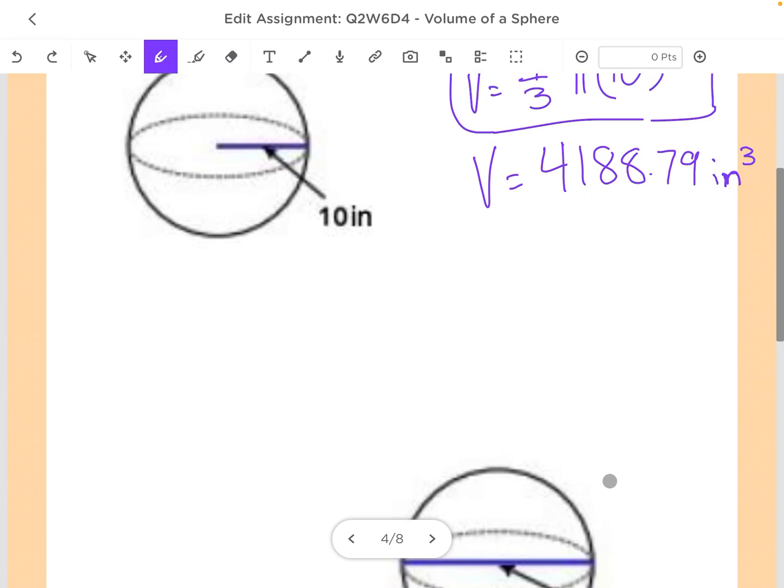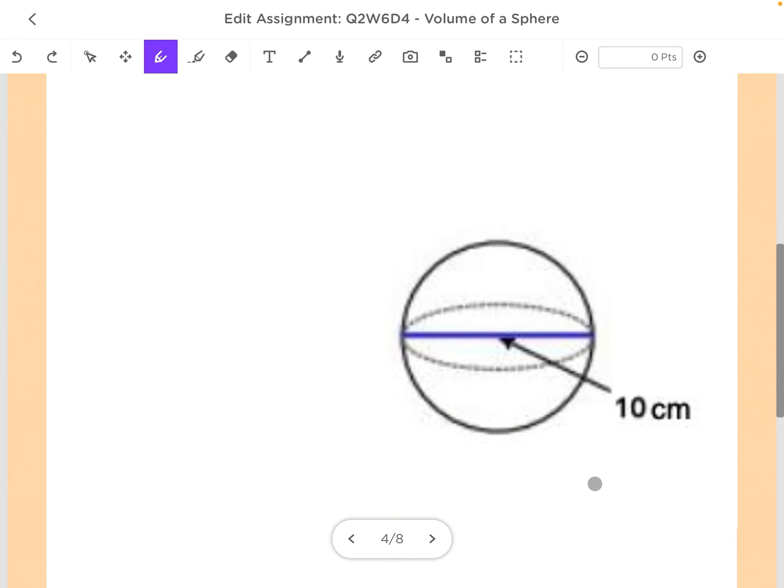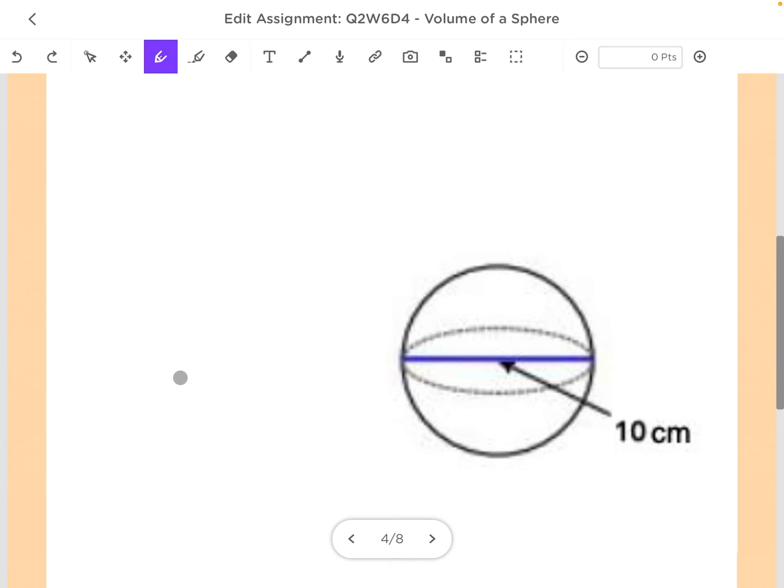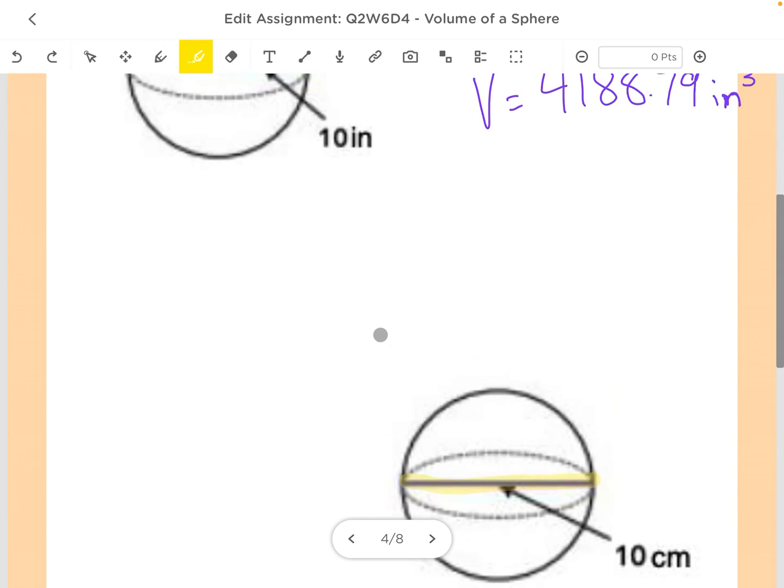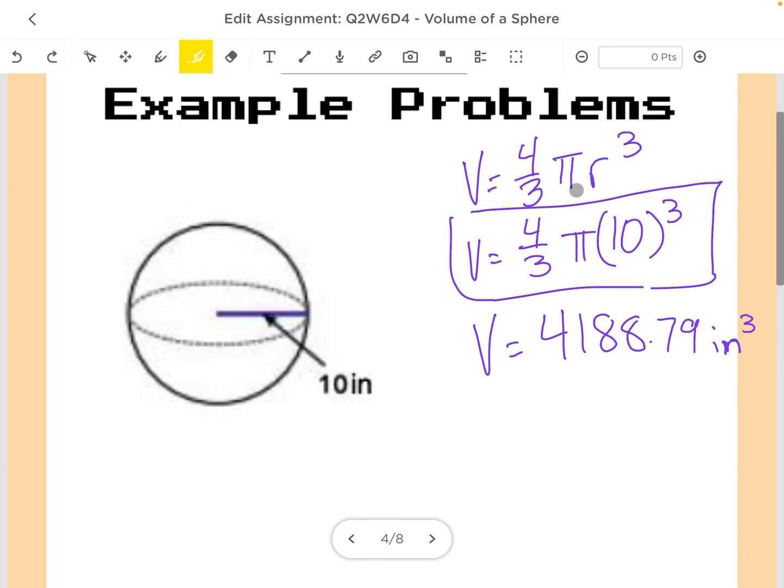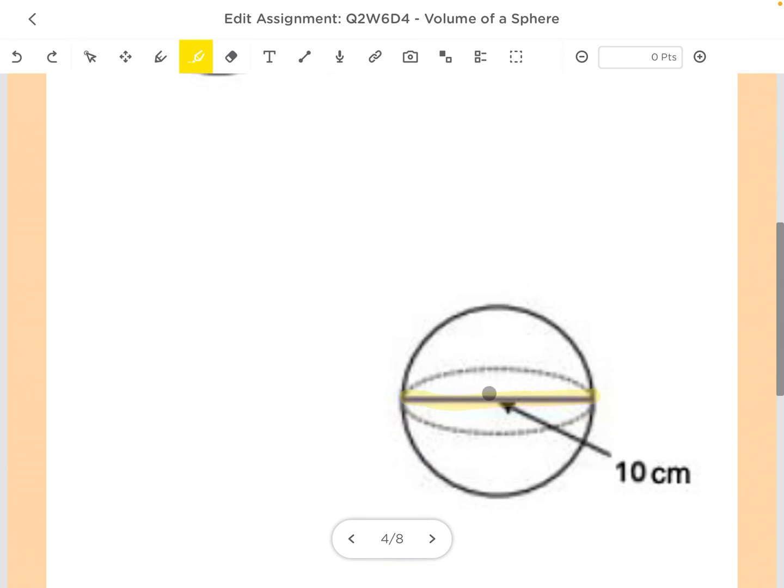All right, so now we can do a similar problem here, but we'll do this one with Desmos. So just looking at it right quick here, looks like I have the diameter. Remember, for my volume formula I need radius. So that means I've got to take that diameter and cut it in half. So I'm just looking at that one side, the radius.